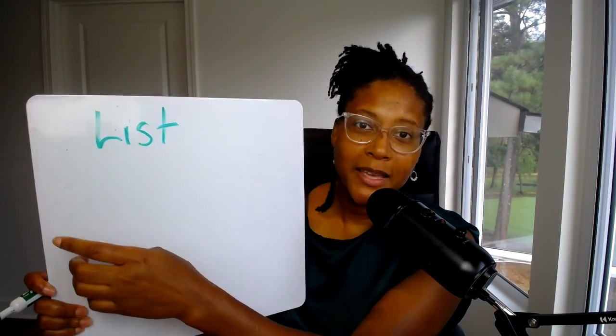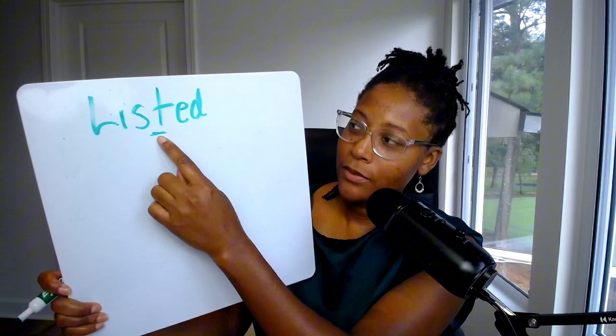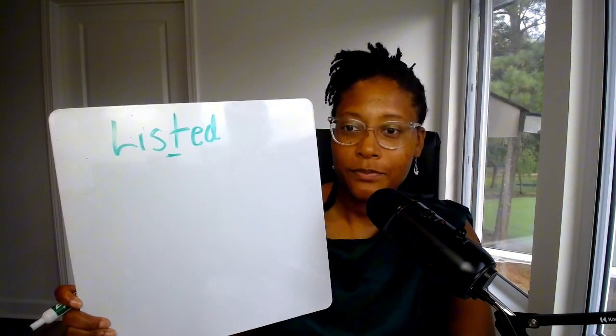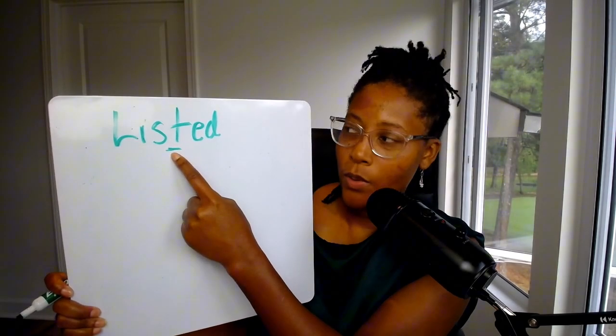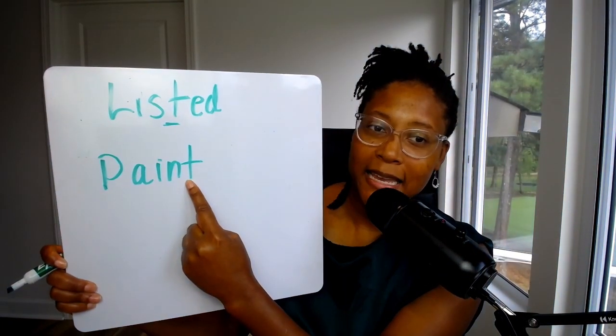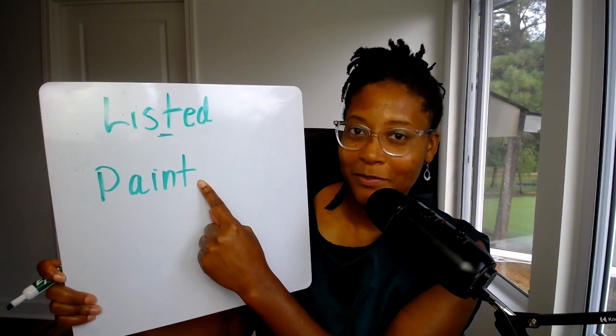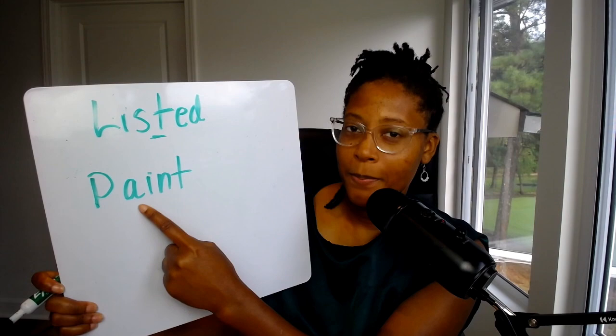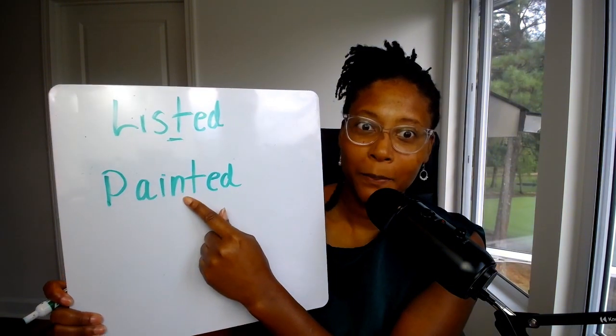Let's go to the ID sound. The word 'list' becomes 'listed,' because you see here that the T falls under the ID category. So you're going to say: list-id, listed. Another one would be 'paint' — it ends with a T, and when I add the ED, it's going to make the ID sound. So: painted.